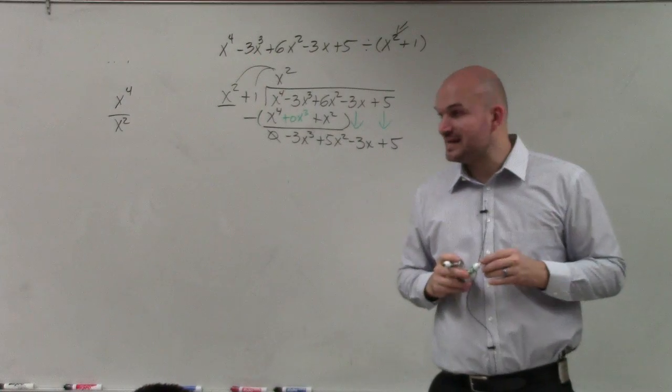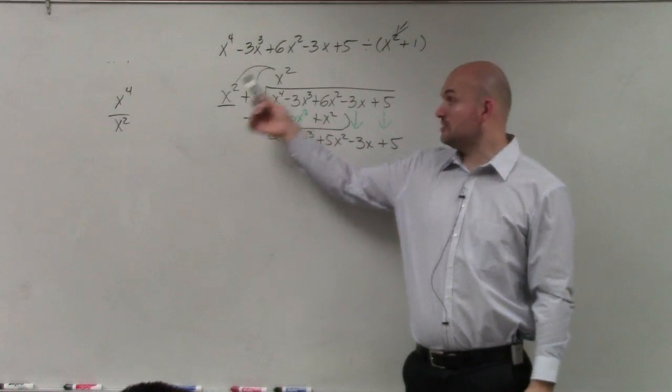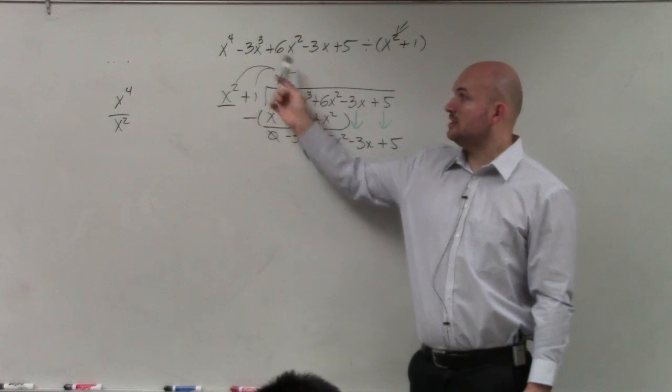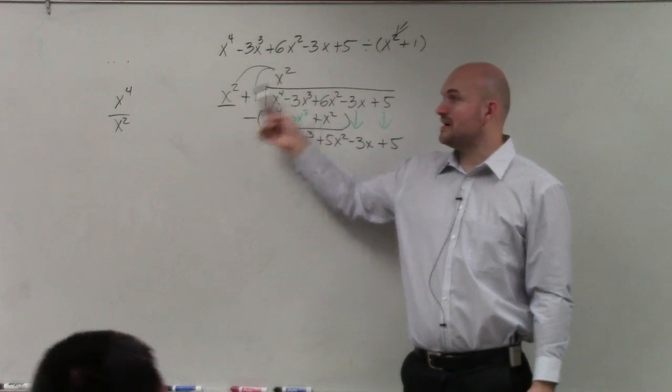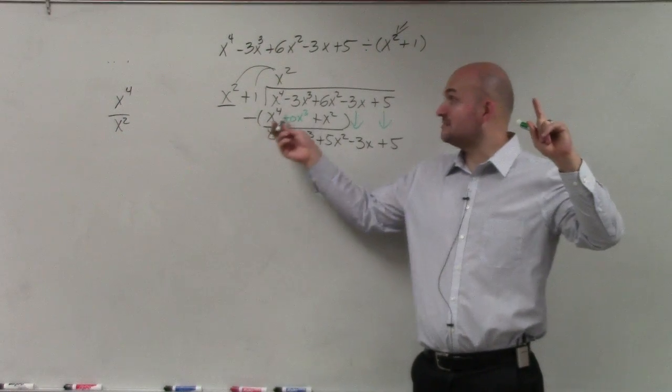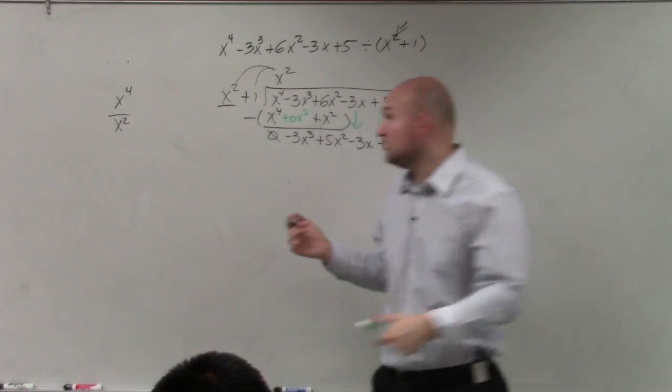So what I want you guys to understand is that is like one round. Basically what I did, I took the first term, divided it into the first value, put my quotient answer, multiplied it by both of them, wrote that down, and then subtracted. So I divided, multiplied, and then subtracted. That's one round. Well, guess what? I still have more rounds to go. So now basically what you do is just do it all over again.